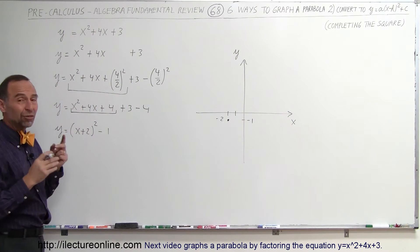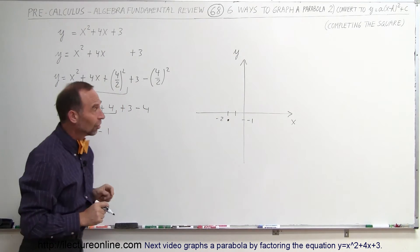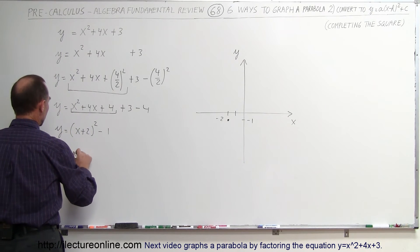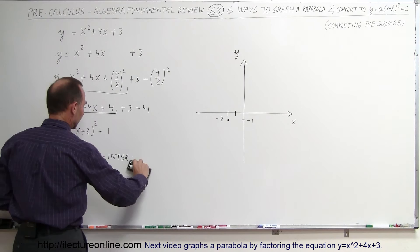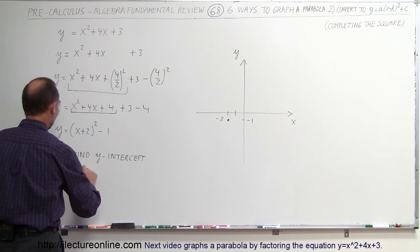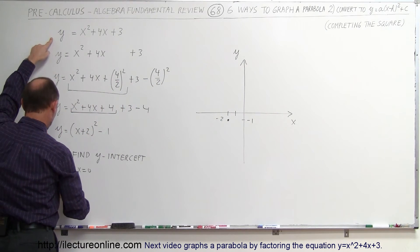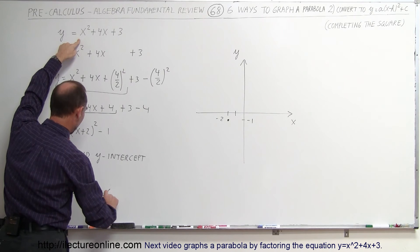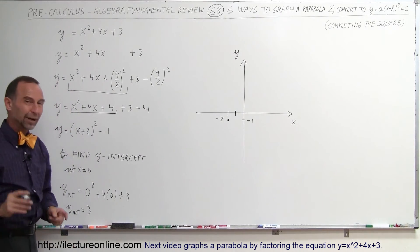Since there's a positive coefficient — positive 1 — in front, we know the parabola opens upward. One more thing that helps us graph it is finding where the parabola crosses the y-axis. Where it crosses the y-axis, x equals 0. So to find the y-intercept — the point where the graph crosses the y-axis — we set x equal to 0. That gives us y equals 0 squared plus 4 times 0 plus 3, so the y-intercept occurs at y equals 3.